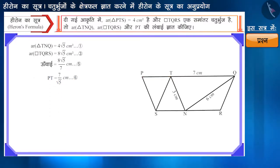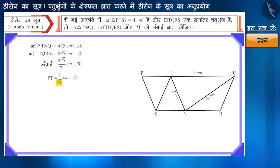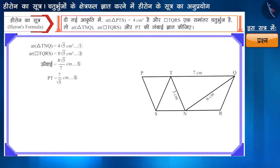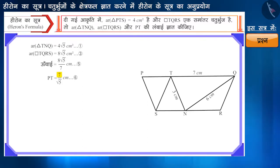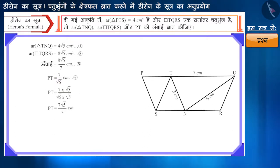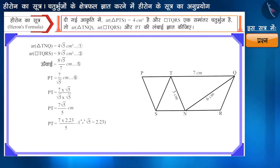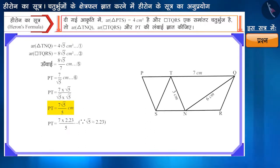दोस्तों, आप देख सकते हैं कि इसके हर में एक अपरिमेय संख्या यानी √5 है। यदि आप यहाँ √5 का मान रखेंगे तो उत्तर प्राप्त करने में कठिनाई होगी। हम अंश और हर दोनों में √5 से गुणा कर इसका परिमेयकरण कर सकते हैं, जिससे हर में एक परिमेय संख्या प्राप्त होगी। तो अब हमें PT की लंबाई 7√5/5 cm प्राप्त होई।